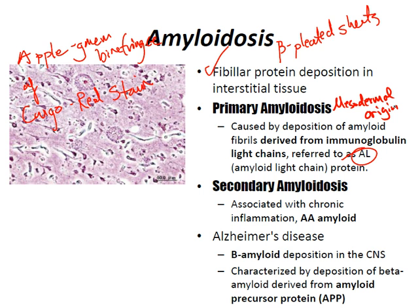Primary amyloidosis is deposited in tissues of mesodermal origin — if it comes from the mesoderm, like the heart, muscle, or tongue, that's primary amyloidosis. It's associated with plasma cell disorders such as multiple myeloma and Waldenström's macroglobulinemia.